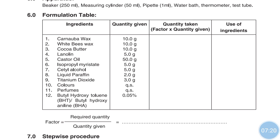Now see the role of each ingredient. Carnauba wax is used as a softening agent; white beeswax is also a softening agent. Cocoa butter is a dispersed phase; lanolin is also a dispersed phase. Castor oil is used as a plasticizer — a plasticizer is a substance added to a material to make it softer and more flexible, to increase plasticity, decrease viscosity, and decrease friction during handling in manufacturing.